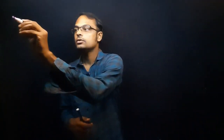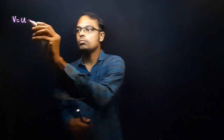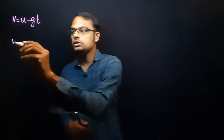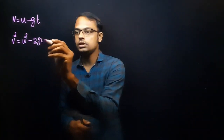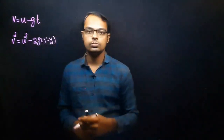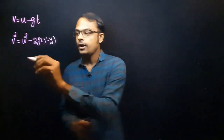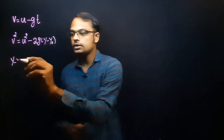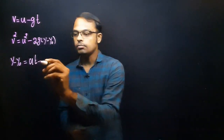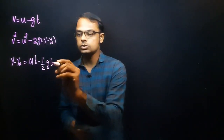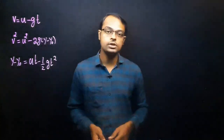The equations of motion for vertical motion under gravity — we have already discussed these. The first equation is v = u − gt. The second equation is v² = u² − 2g(y − y₀). And the third equation is y − y₀ = ut − ½gt².